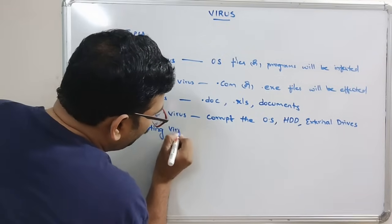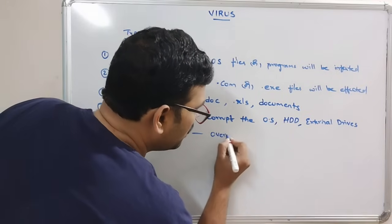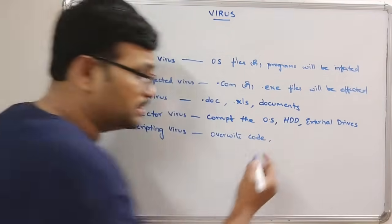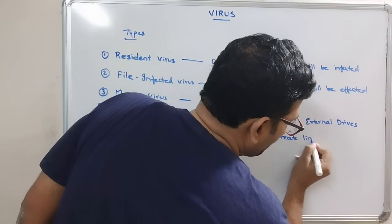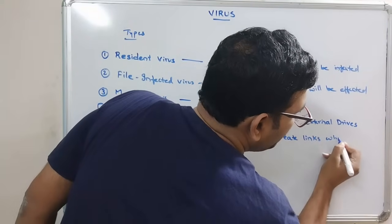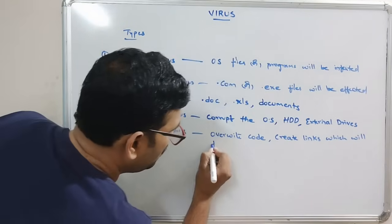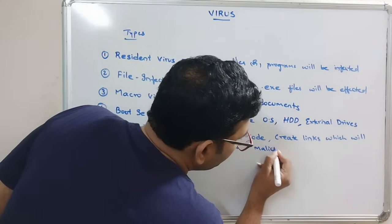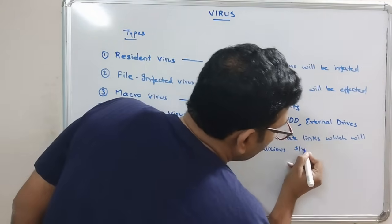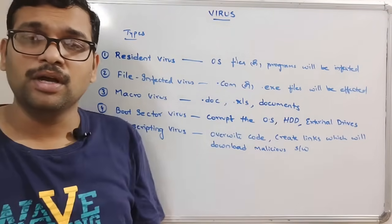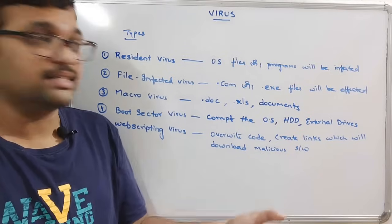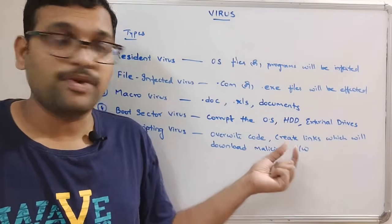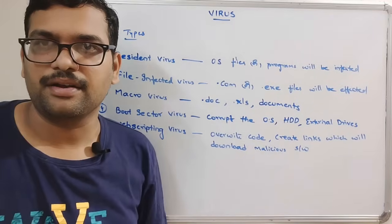The next type is the web scripting virus. It will overwrite the code and create links that download malicious software. Through that software, our files will get infected.